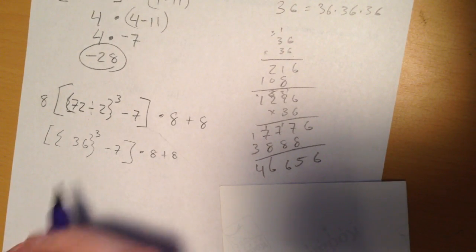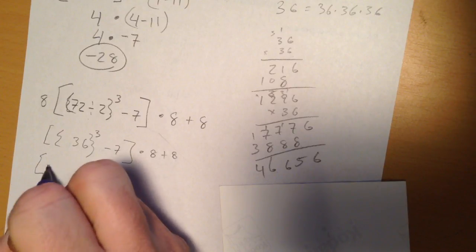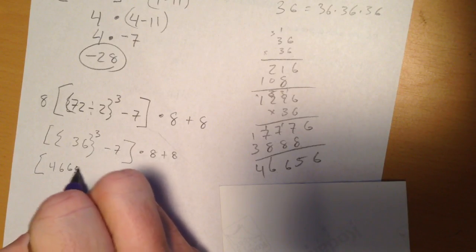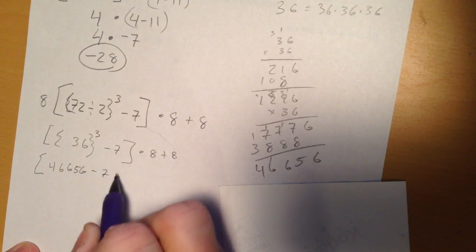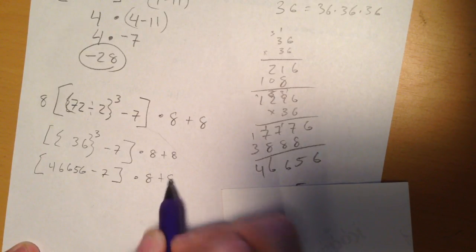So, when I rewrite this, I'm doing brackets, 46656, minus 7, times 8, plus 8.